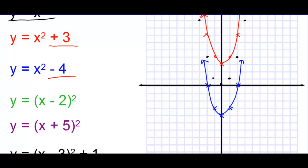A minus 2 on the inside — you've got to think backwards. You would think you would go to the left, but you actually go to the right. So we're going to go right 2 spaces. This moved over 2 to the right.